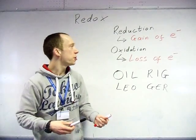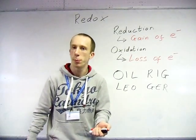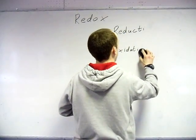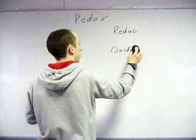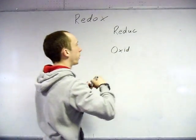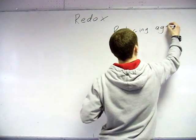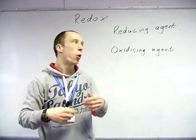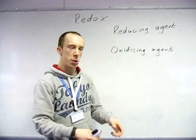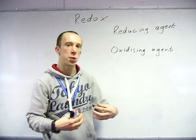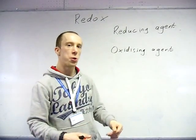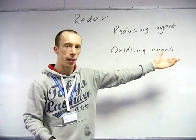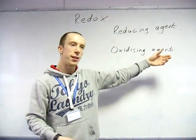It's worth pointing out the difference when you look at a reducing agent though, some people get a bit mixed up with this. Now a reducing agent causes what it is reacting with to be reduced. So it reduces the other side, hence obviously itself it must be oxidised. Now an oxidising agent causes the other side to be oxidised, hence itself is reduced. So a reducing agent gives away electrons. An oxidising agent takes electrons.